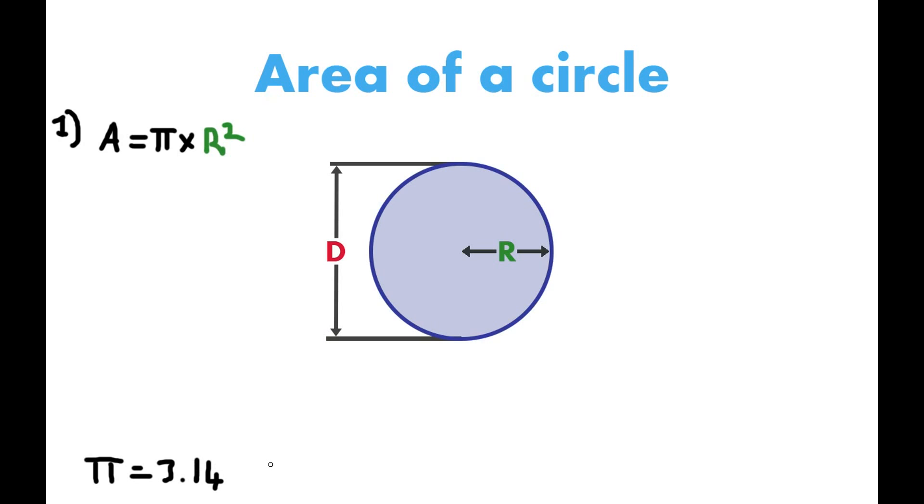So let's do a work example, shall we? Let's say that this distance here, the radius—the distance from the center point of the circle to the very edge—is 10 meters.